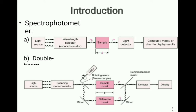We have two types of spectrophotometer: single beam spectrophotometer and double beam spectrophotometer. As the name suggests, single beam spectrophotometer produces a single beam of light.